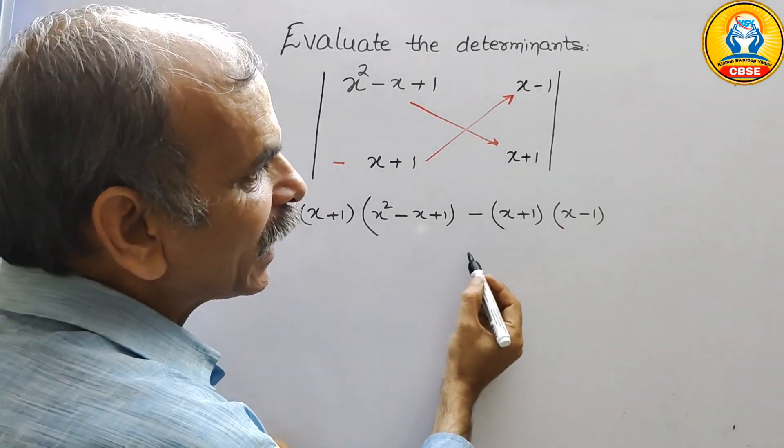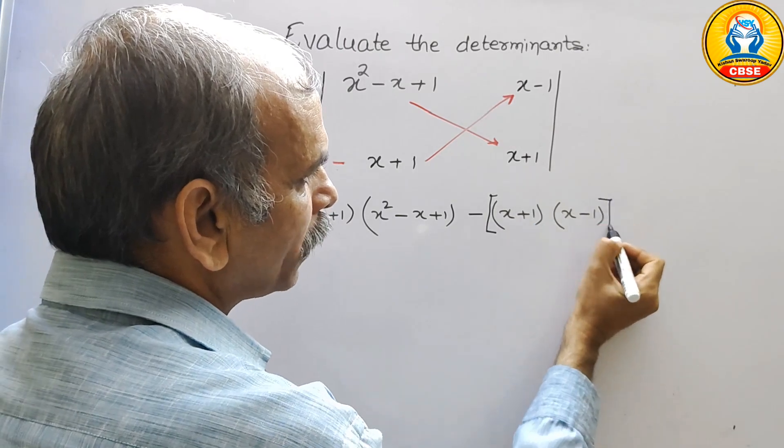and here it will be x minus 1. So here minus sign is there, that means here we can go for a big bracket.